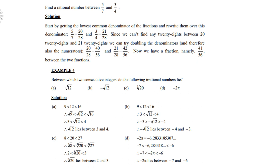Since we can't find any twenty-eighths between 20 over 28 and 21 over 28, we can try doubling the denominator and therefore also the numerator. Right, for instance, 20 over 28 becomes 40 over 56. 21 over 28 becomes 42 over 56. Now we have a fraction namely 41 over 56 between the two fractions.